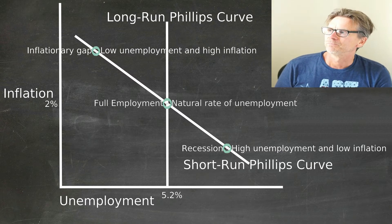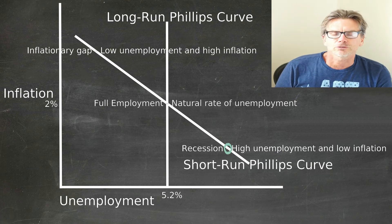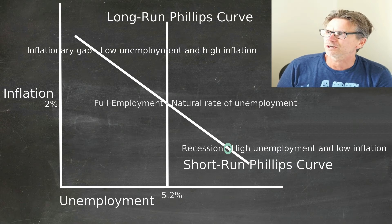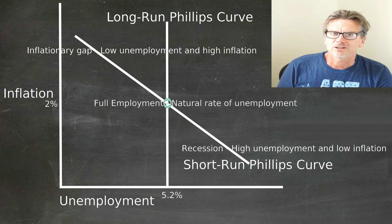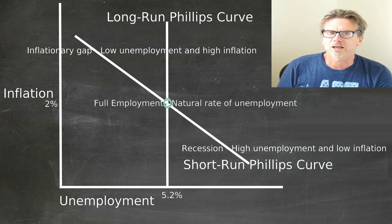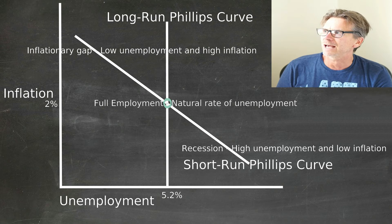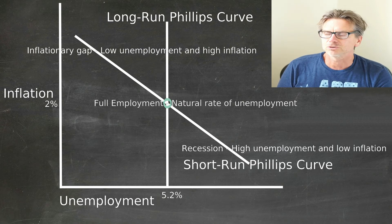The short-run Phillips curve should always naturally start to gravitate back to the long-run. The Federal Reserve, through various policies or government stimuli, tries to influence this. If we're stuck in a recessionary gap, it tries to start the printing presses, stimulate the economy monetarily, and bring us back to full employment. There's a problem with that — people have expectations and rational expectations. So there's a question whether the inflationary or recessionary gap can be fixed and whether these policy tools are truly effective.